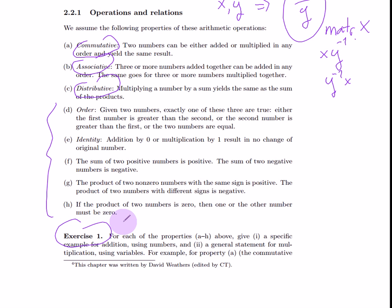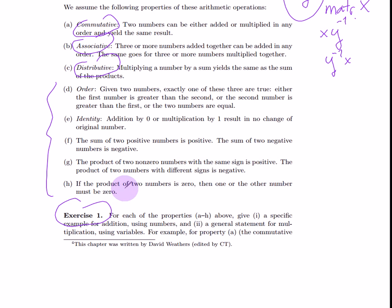So, exercise one is to test your understanding. You're to take each of these statements and to give a specific example using addition and also a general statement using variables for multiplication. Alright, so what do I mean by that? Let's do, for instance, for property A, commutative. Two numbers can be either added or multiplied in any order and yield the same result. What does that mean for addition?